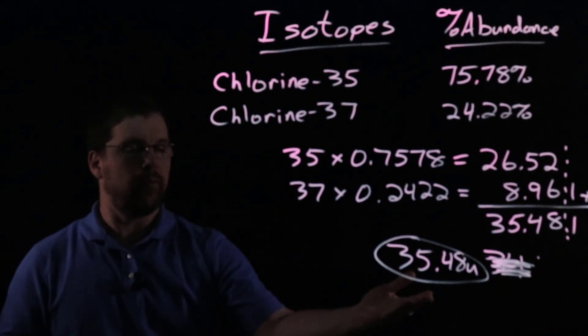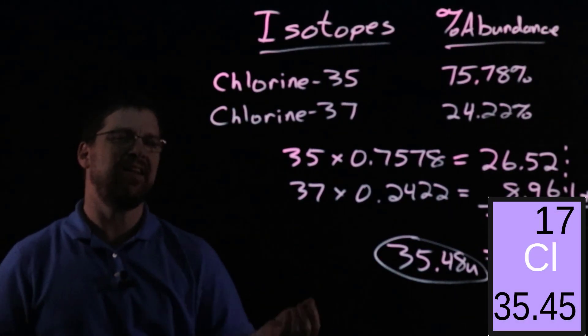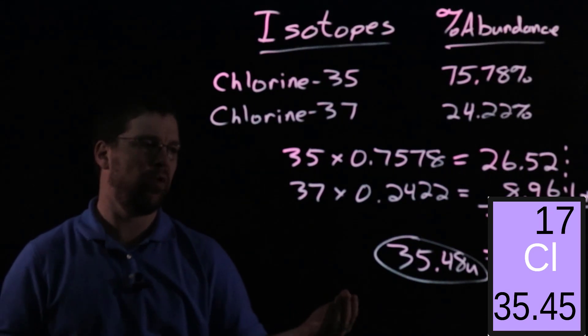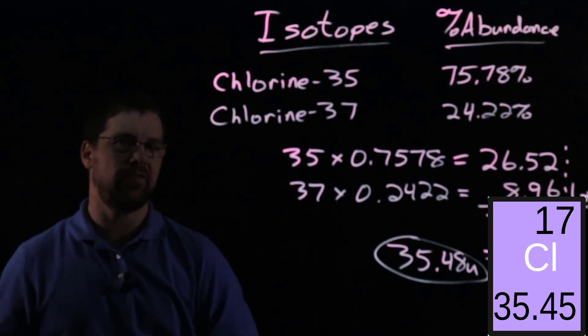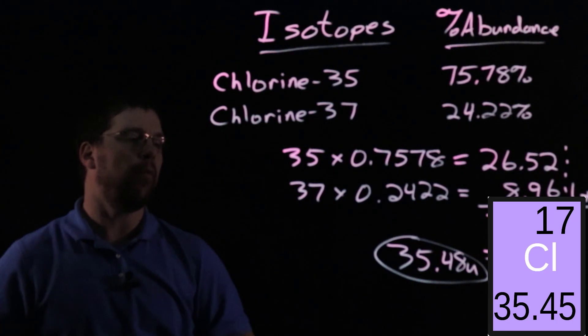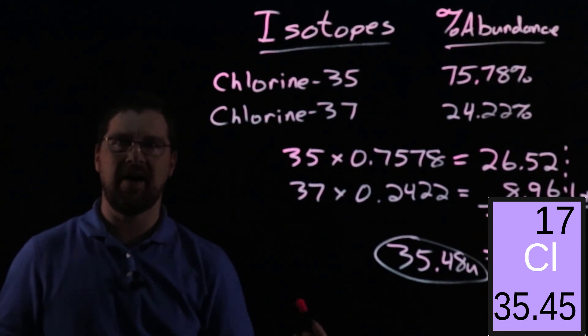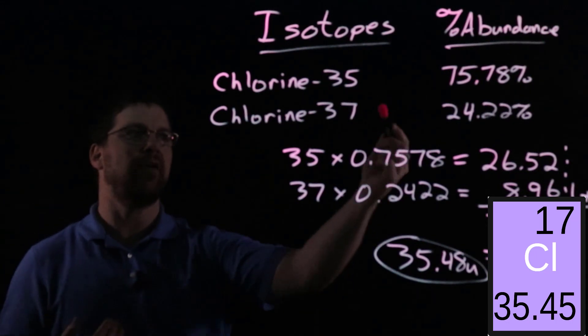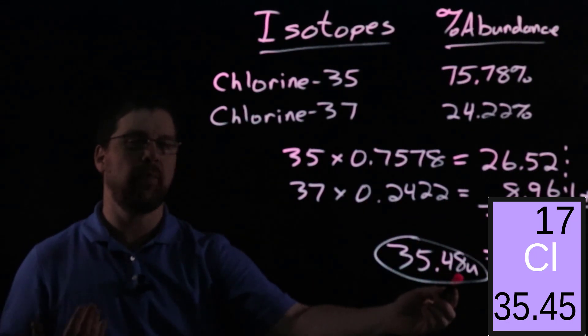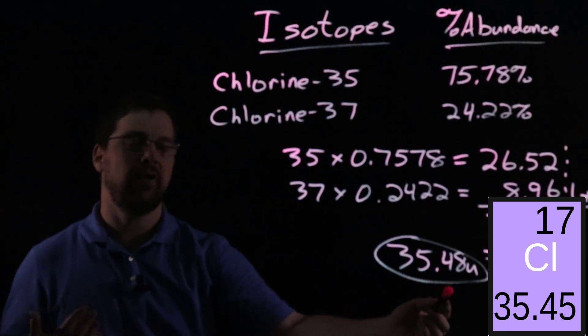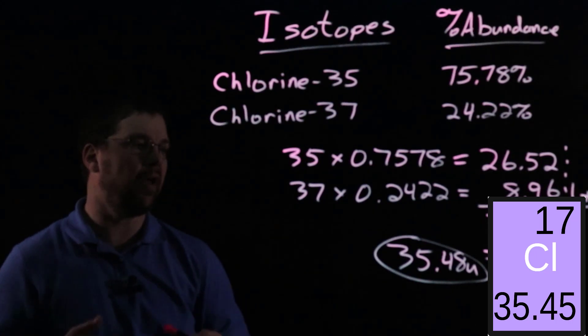And so when we compare this number to the periodic table, we see it's not an exact match. It's 35.48, periodic table gives us 35.45. But when we consider that the masses we used were whole numbers, they're rounded off values. So because we used rounded off values, we can expect a little bit of error in the answer that we got. But still, we're very close